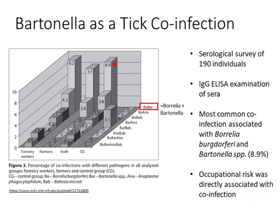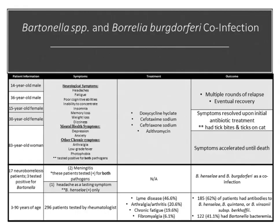We have seen Bartonella as a tick co-infection. Shown here is a study of forestry workers, farmers, and a control group — a serological survey of 190 individuals. Immunoglobulin G ELISA was used to examine serum for exposure to Borrelia, Bartonella, Anaplasma, and Babesia. The most common co-infection was associated with Borrelia burgdorferi and Bartonella species. Importantly, occupational risk was also directly associated with co-infections. However, it is important to keep in mind that serological positivity does not indicate active infection, especially with respect to Bartonella.